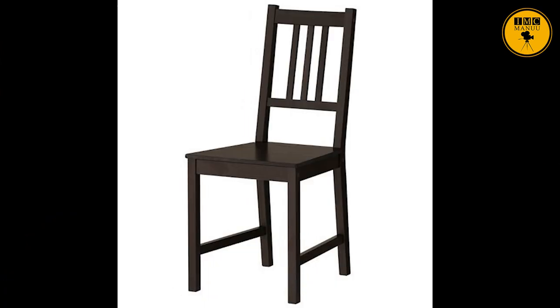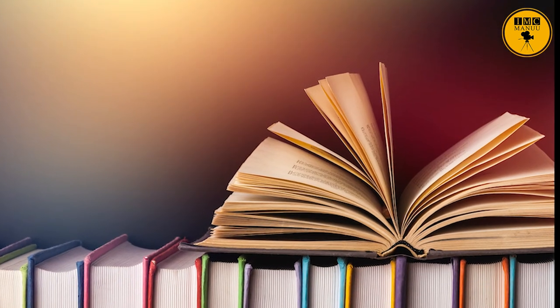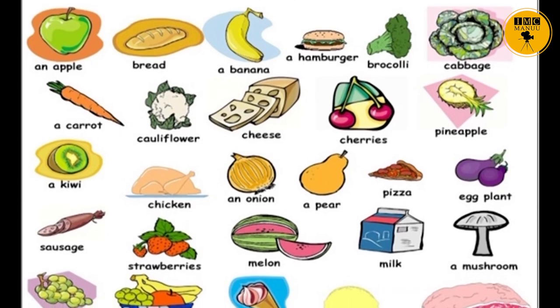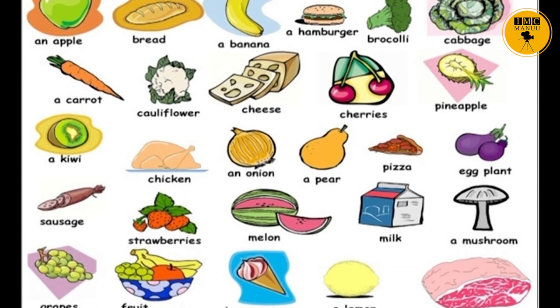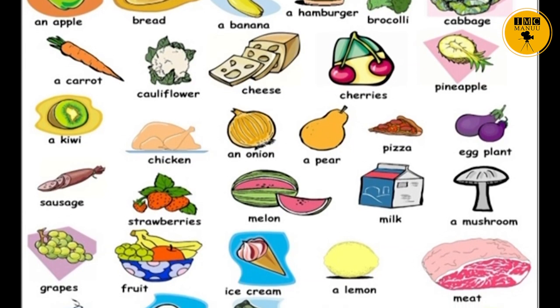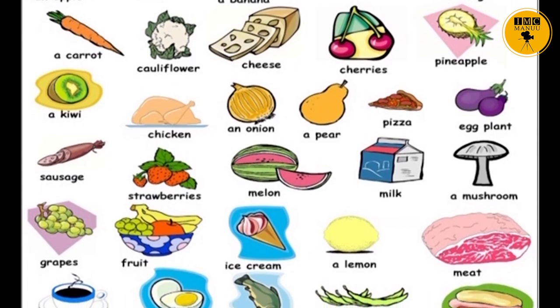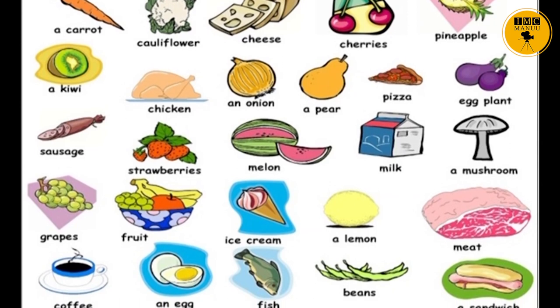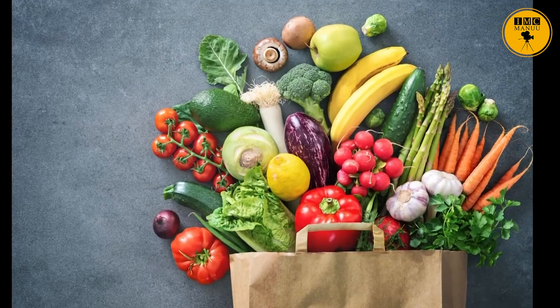The next technique is Material Association. The teacher shows real materials to explain the words they represent. For example, the teacher can show a chair, board, or bring food items and fruits into the classroom, showing them to students to elicit the meaning of different words. The teacher can bring real materials such as fruits, vegetables, and kitchenware, and try to elicit the meaning of these material nouns by directly showing them to students.